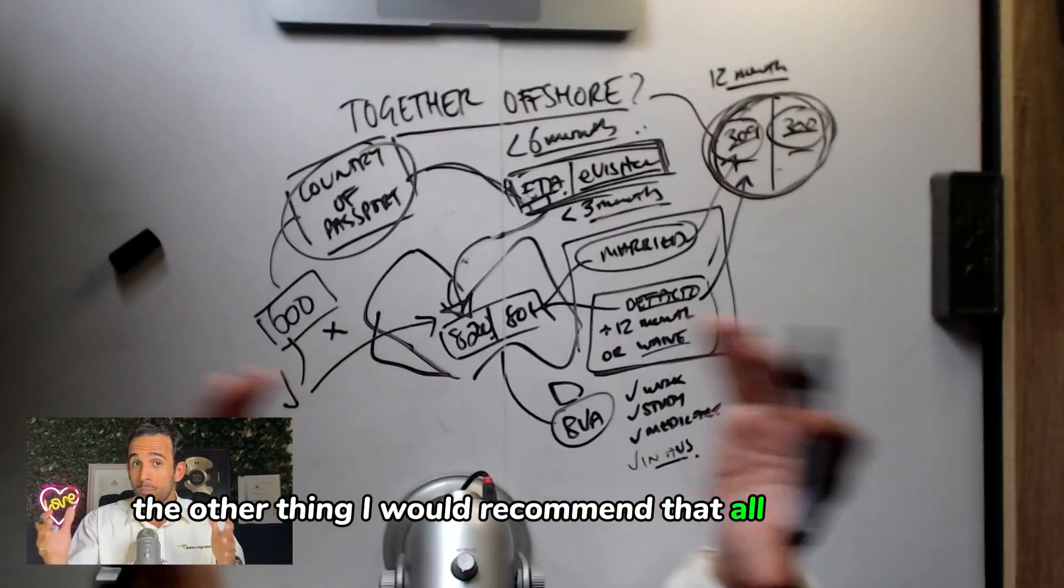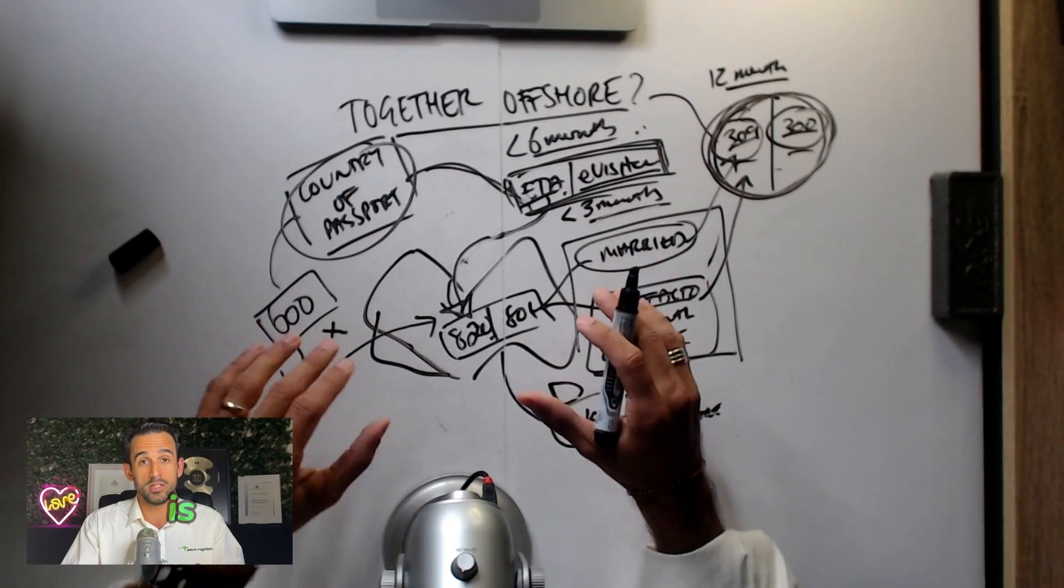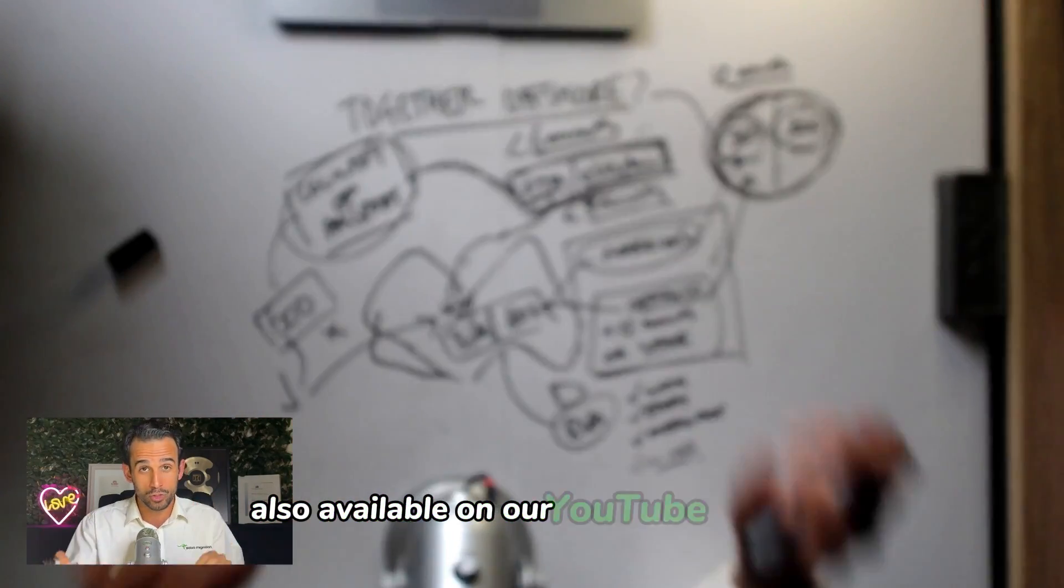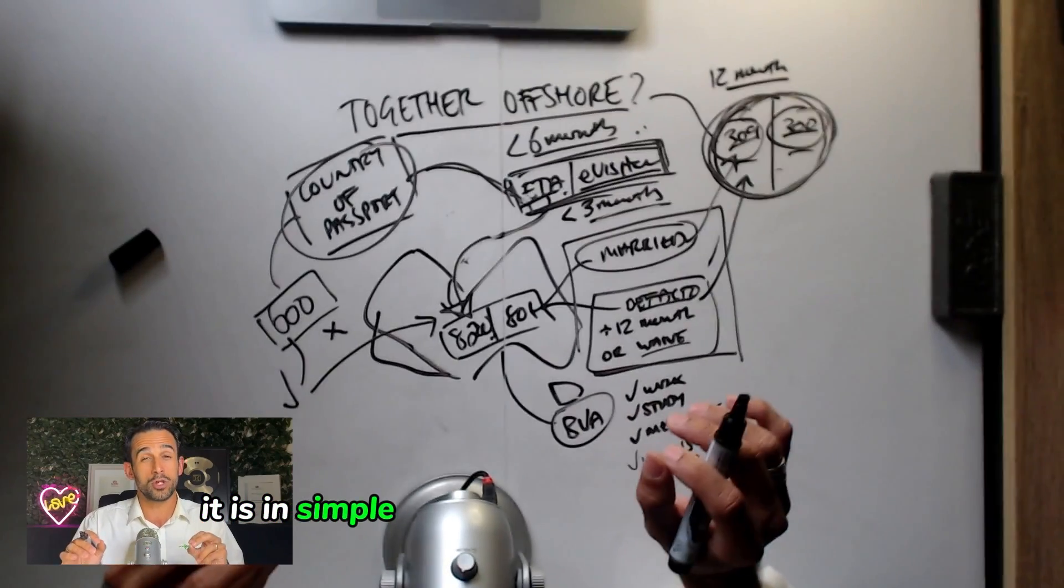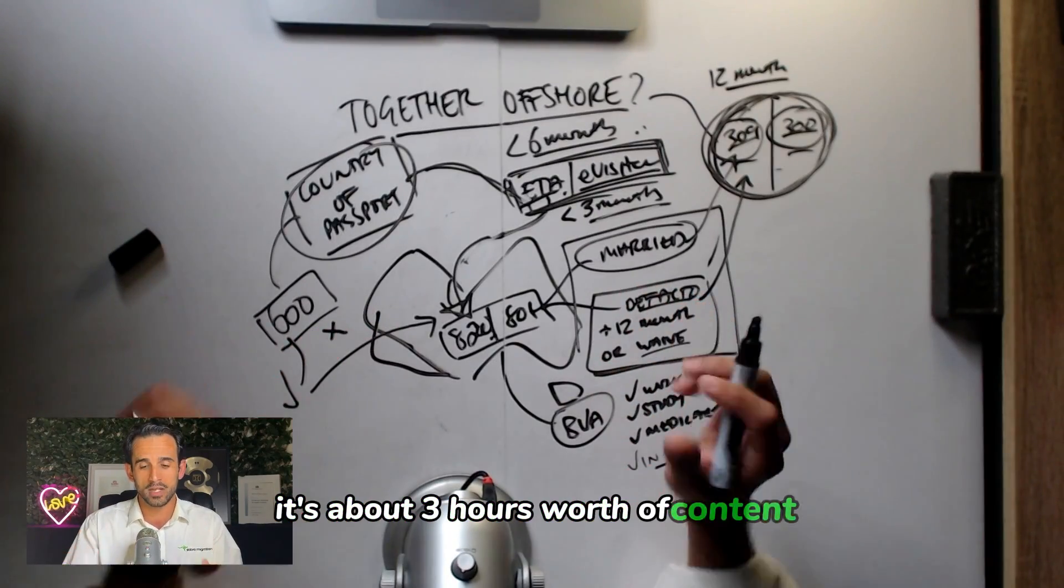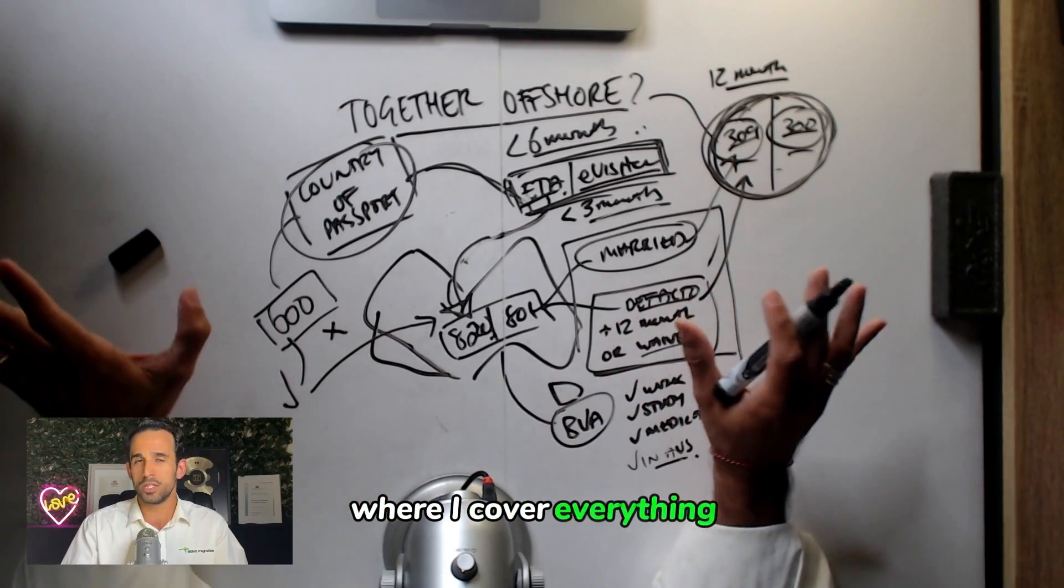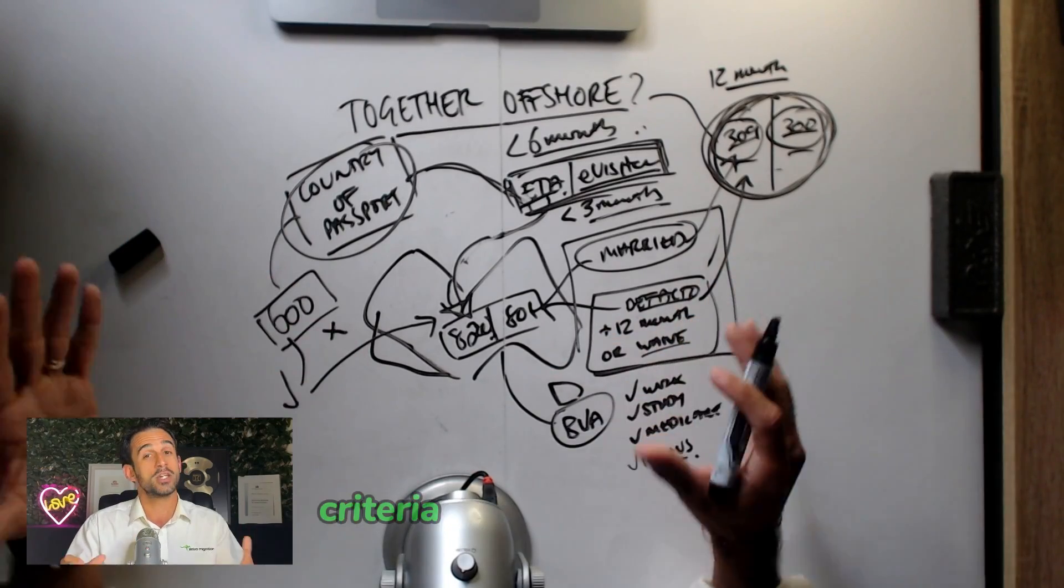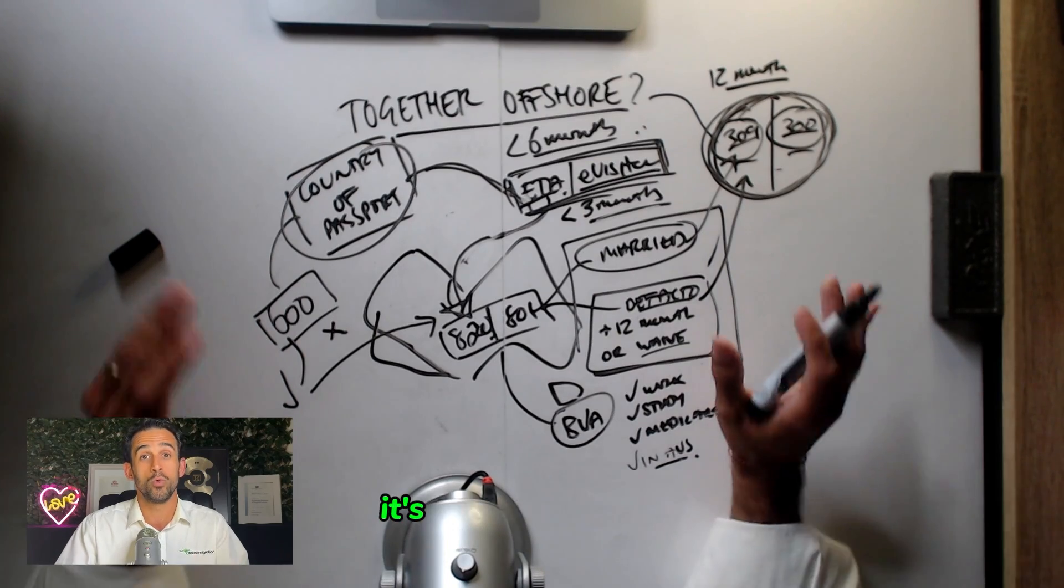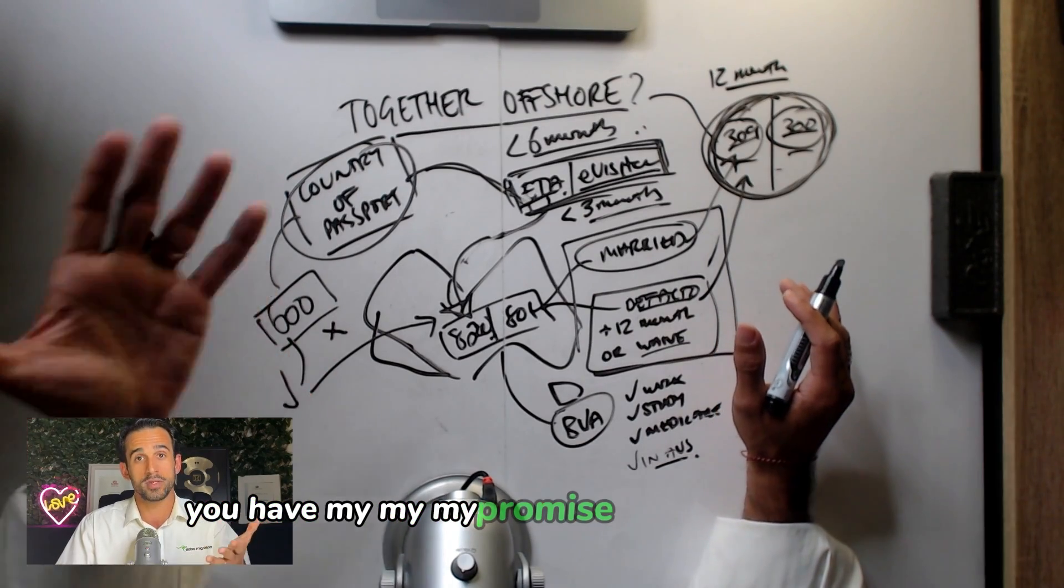The other thing I would recommend that all couples do, irrespective of their situation, is please watch our Partner Visa Secrets modules, also available on our YouTube channel. It is, in simple terms, like getting your diploma for your Australian partner visa. It's about three hours worth of content, where I cover everything you would ever need to know about partner visa criteria and options like this, in a lot more detail, and it's worth your while. You have my promise and my guarantee.